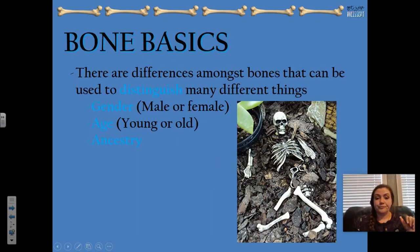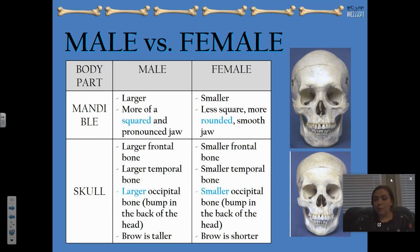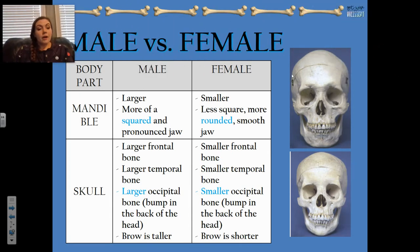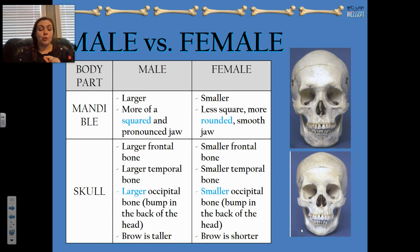There are differences among bones that can be used to distinguish sex — male or female — age, and ancestry. For male versus female, looking at the mandible — that's your jawbone — the male has a more square and more pronounced jaw. You can see it pretty clearly in these two pictures. This one is way more square with a little point, compared to this rounded mandible, which is the female skull.